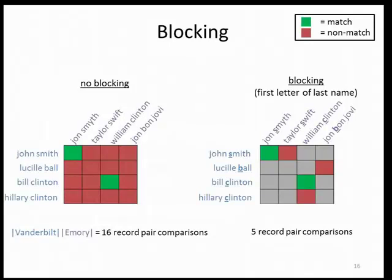If someone's last name was misspelled, you may fail to compare the two record pairs that are actually true matches, so you may incorrectly classify them. Maintaining accuracy while reducing computational complexity is the challenge in blocking.